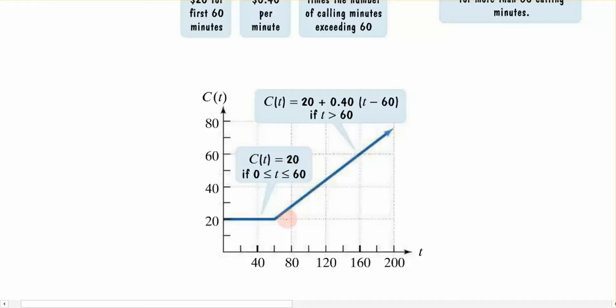The second part of my function, this linear equation here, and it's increasing, right? That represents me talking more than 60 minutes, and I'm going to be charged $0.40 per minute times however many minutes I talk. So we know that we would be increasing. The more you talk, the more money it's going to cost. And so this portion of the graph is represented by that equation.